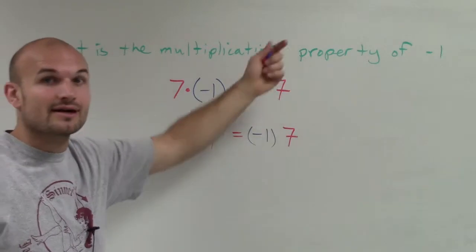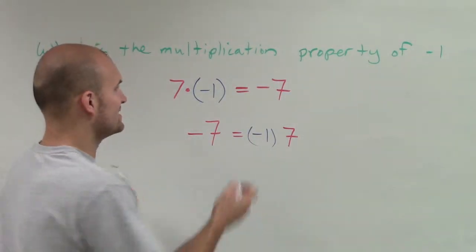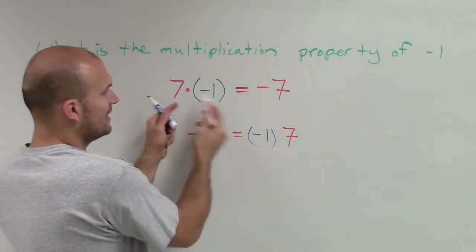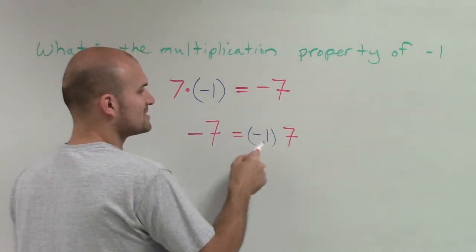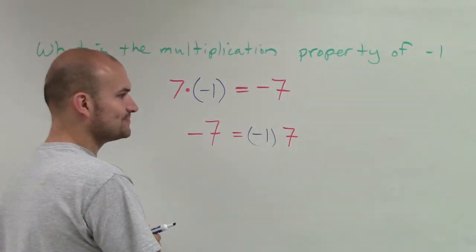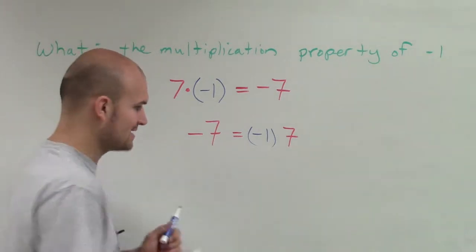Well, remember the reason why I did that is this is commutative property. It doesn't matter which order I represent multiplication, so I can represent it as negative 1 times 7. You can see how these are going to be exactly similar, so it's very important for us to understand that.